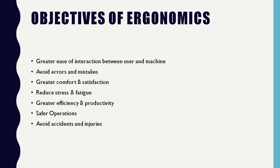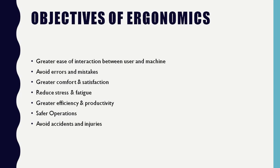The overall objectives of ergonomics are: greater ease of interaction between user and machine, avoiding errors and mistakes, providing greater comfort and satisfaction, reducing stress and fatigue, improving efficiency and productivity, ensuring safer operation in any job profile, and avoiding accidents and injuries.